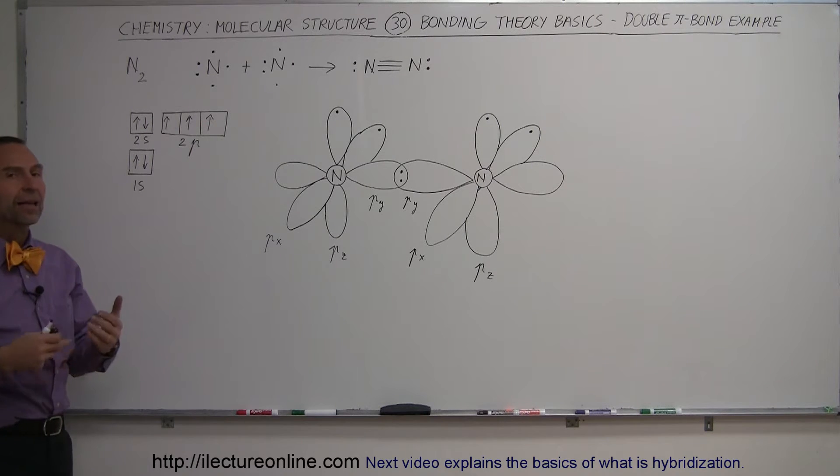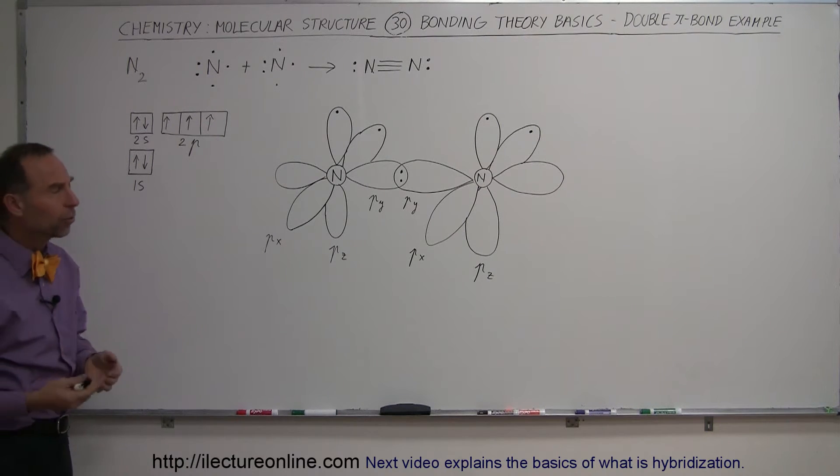So how does a bond like that form? What does it look like and why are there pi bonds as well as the singular sigma bond? Let's see in just a moment.